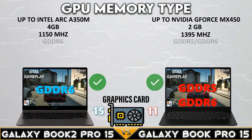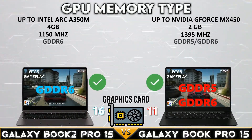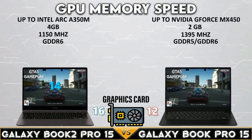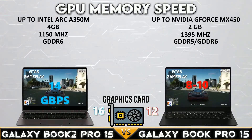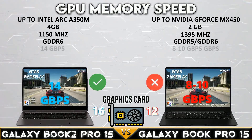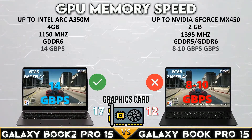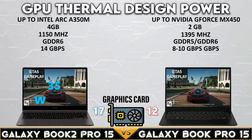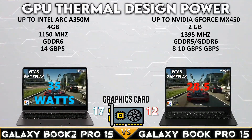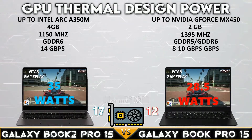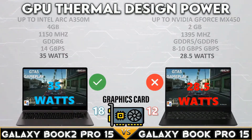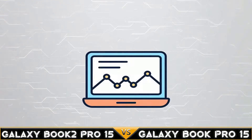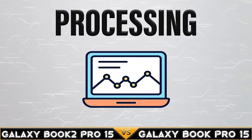Both laptop GPUs support GDDR6 memory. The Galaxy Book 2 Pro 15 2022 supports 14 Gbps memory speed, and once again the Galaxy Book 2 Pro 15 2022 has a higher GPU TDP.